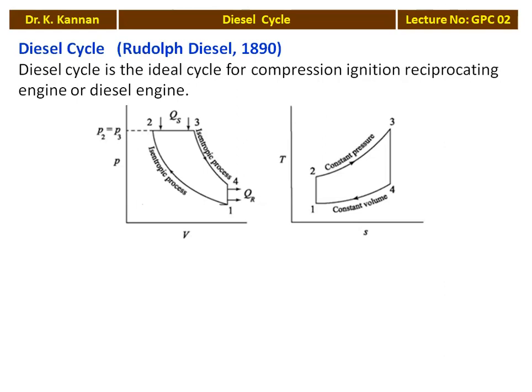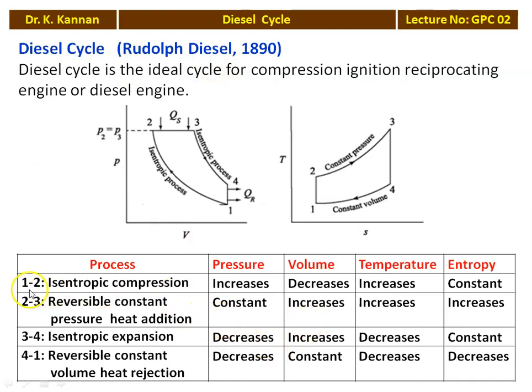There are four processes: 1 to 2 isentropic compression process, 2 to 3 constant pressure heat addition process, 3 to 4 isentropic expansion process, and 4 to 1 constant volume heat rejection process. So there is one constant volume process, one constant pressure process, and two constant entropy processes — the compression and expansion are constant entropy processes.